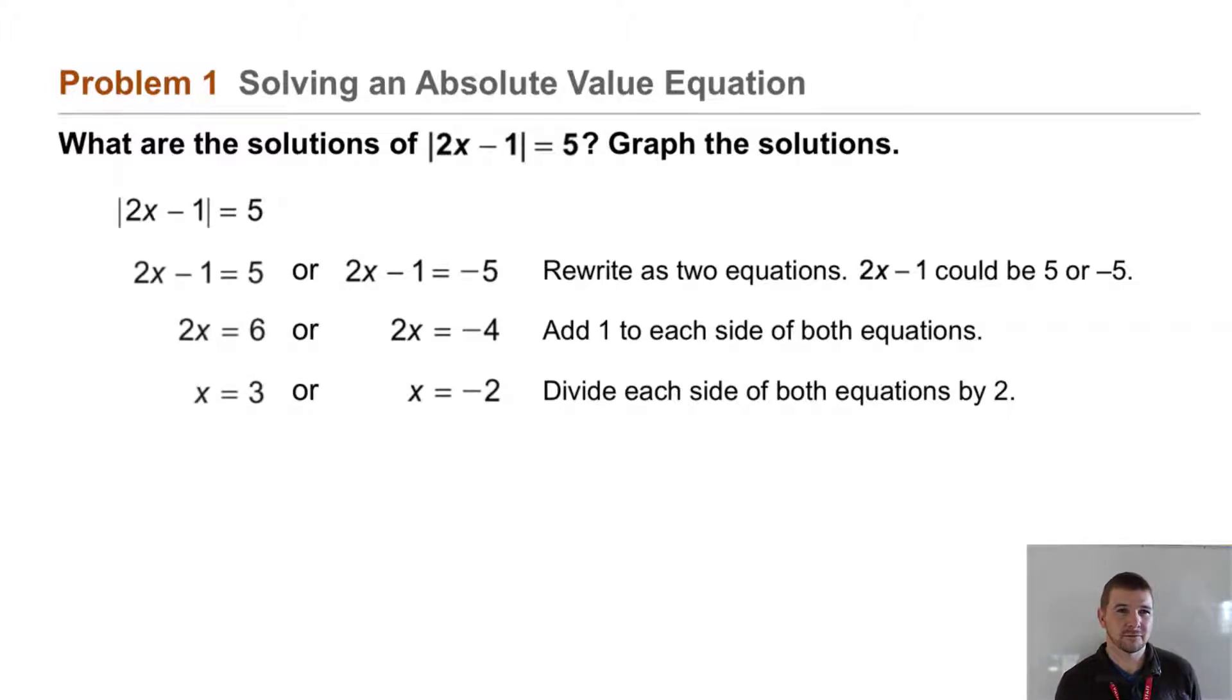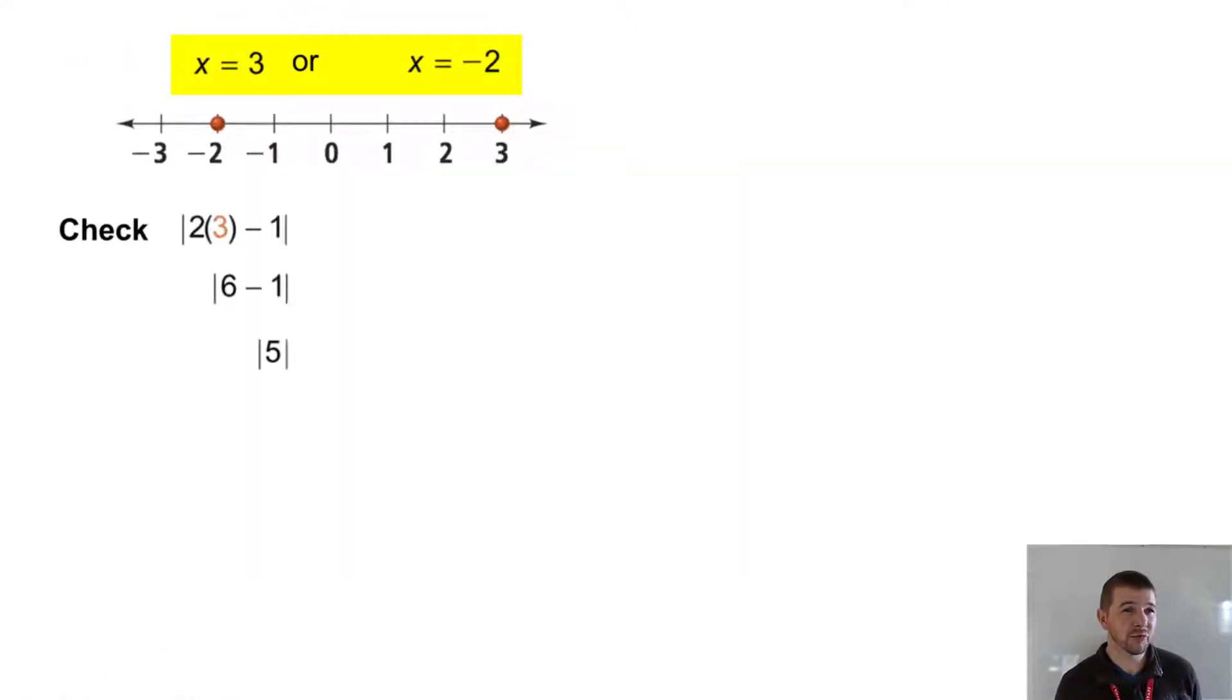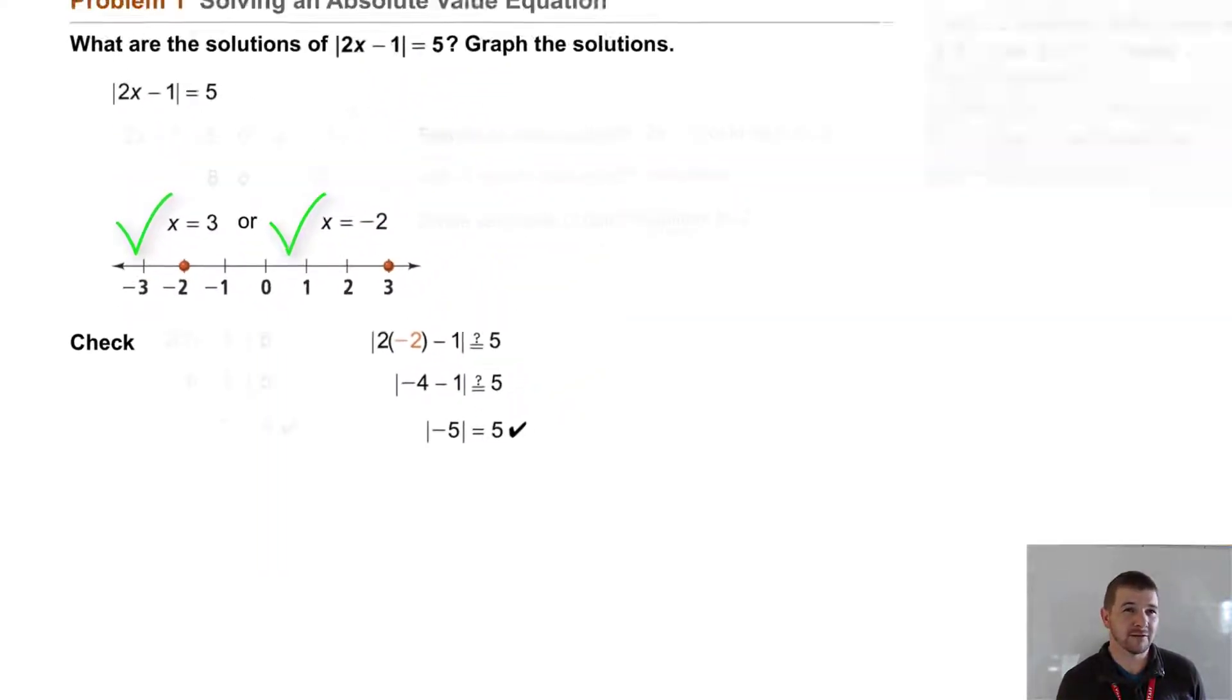We can check these. First, substitute 3 in place of x in the original equation: |2(3) - 1| = |6 - 1| = |5| = 5, so the solution 3 works. Similarly, we can check -2: |2(-2) - 1| = |-4 - 1| = |-5| = 5. The solution -2 also works.